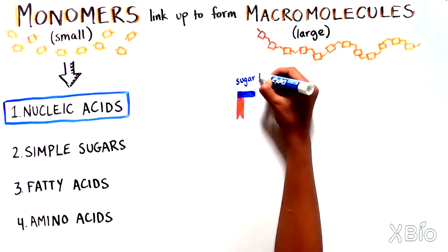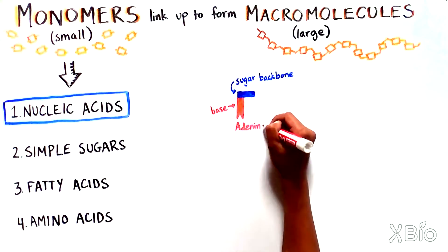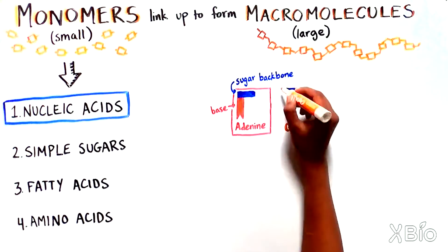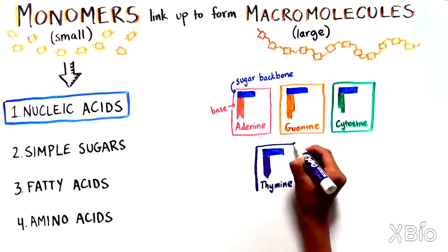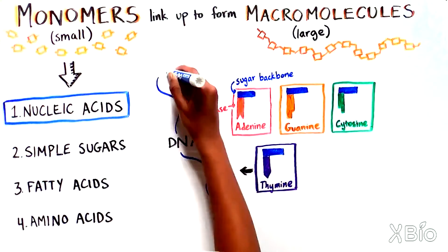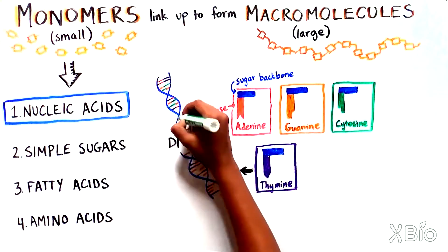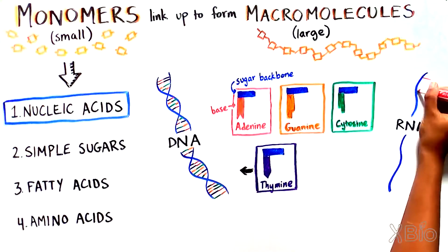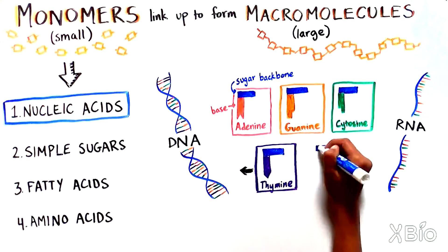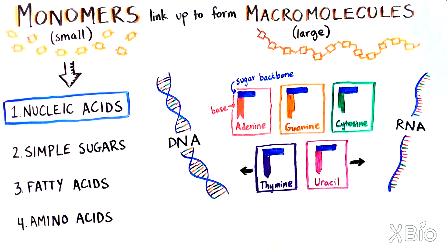Nucleic acids are made up of a sugar backbone and a base. The base is the monomer. There are four of these bases: adenine, guanine, cytosine, and thymine. You have probably heard of these as the building blocks of DNA and the related nucleic acid, RNA. RNA actually uses uracil instead of thymine.